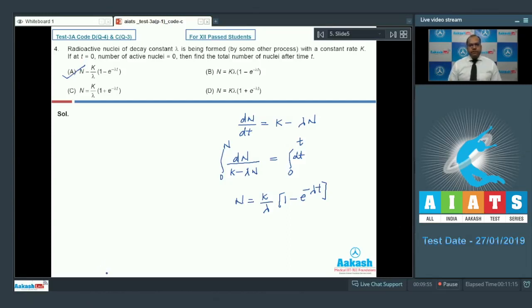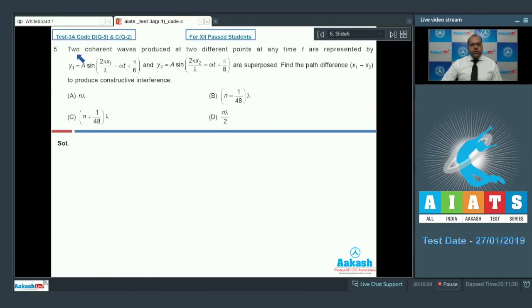Let's move to question number 5. Two coherent waves produced at two different points at any time T are represented by Y1 and Y2 are superposed. Find the path difference X1 minus X2 to produce constructive interference.